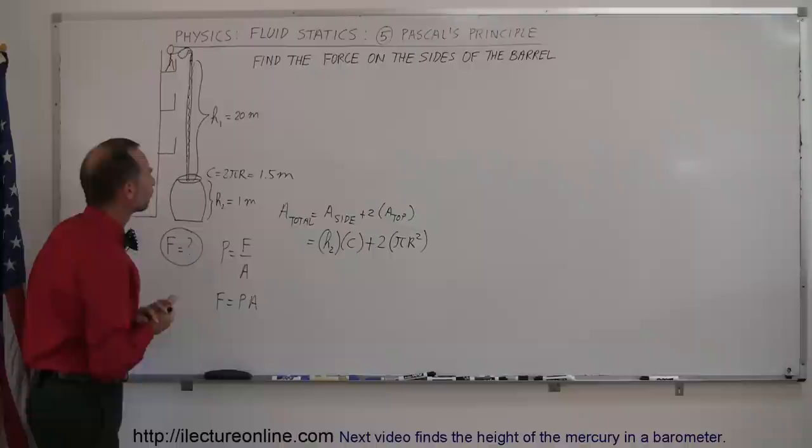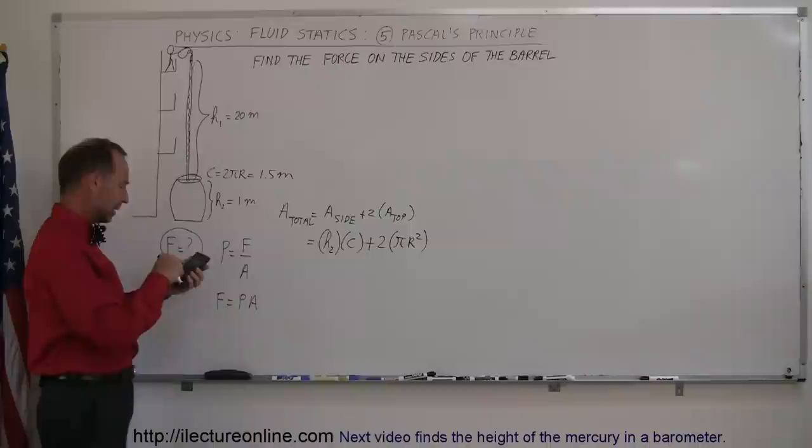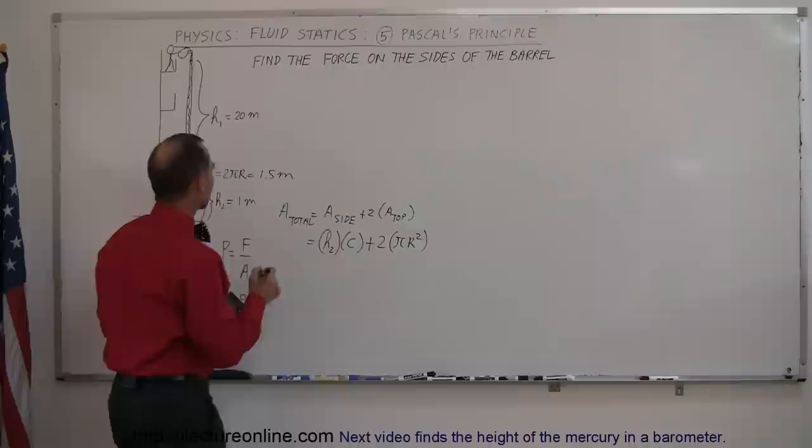If the circumference is 2πr, then 1.5 divided by 2 divided by π gives us a radius of about 24 centimeters. So let's say the radius equals 24 centimeters, which is 0.24 meters.